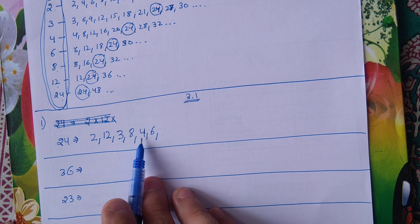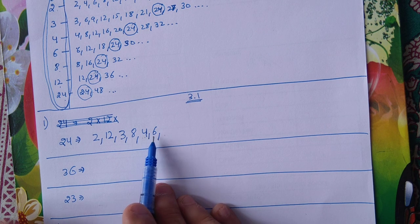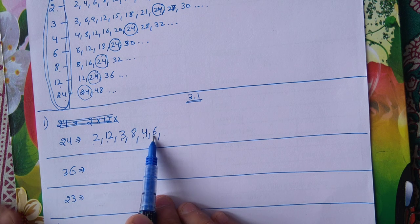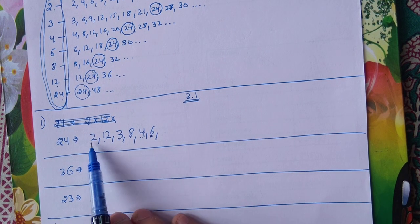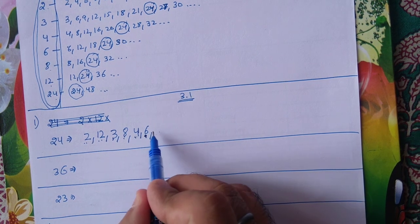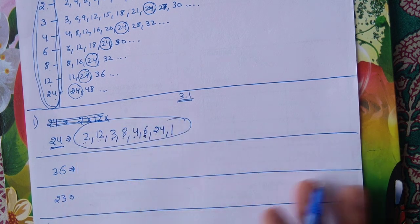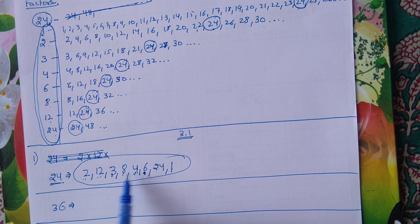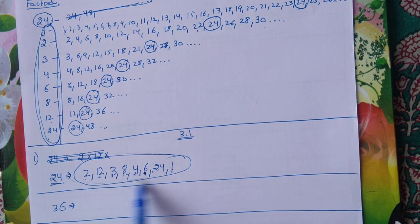6 की table में 24 आता है - 6 × 4 = 24, but 6 and 4 already लिख चुके हैं, तो वहीं पर stop कर दो. जहाँ पर भी number repeat हो जाए वहाँ पर stop कर दो. हमने 2, 3, 4, 6 देखा. 5 की table में नहीं आता. 6 हम already लिख चुके हैं - stop. आपके पास आ गए: 2, 12, 3, 8, 4, 6. Last में यह number खुद 24 और एक 1 लिखना है. So factors of 24 are: 1, 2, 3, 4, 6, 8, 12, 24.